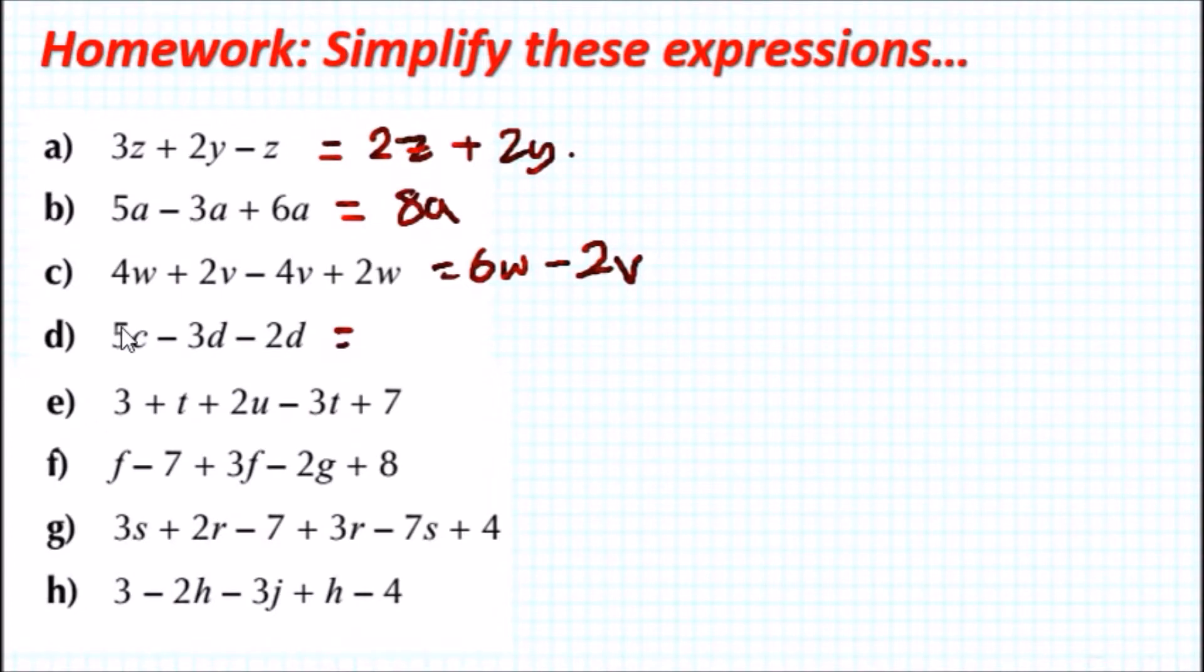Now for part d, what do we have? We've got 5c - 3d - 2d. Looking at c's first, there's only 5c, so we just copy it as is. Then we've got -3d - 2d will give us -5d, combine the d's.